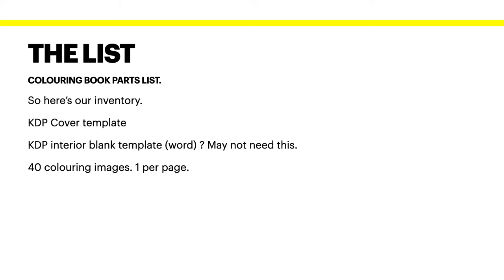Now, what's our parts list? A KDP cover template — we can download that from KDP. A KDP interior blank template. You probably won't need this because it's simple to make in Publisher, but you can look at it to see what they do, as you might have other types of books to set up this way. You'll need 40 coloring images if doing one per page — or you can have lots of images on one page. For a children's coloring book, especially young children, you only want one image per page.